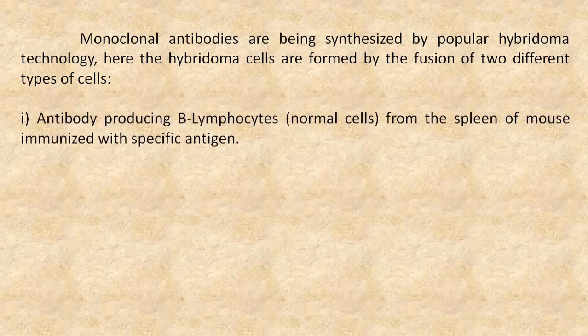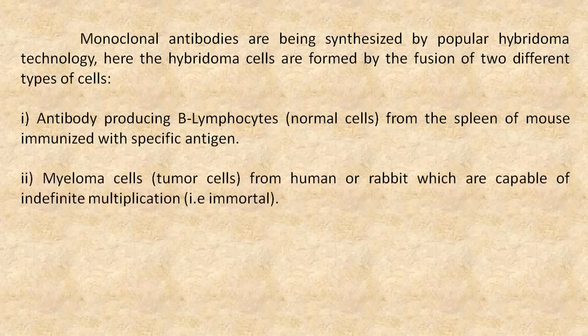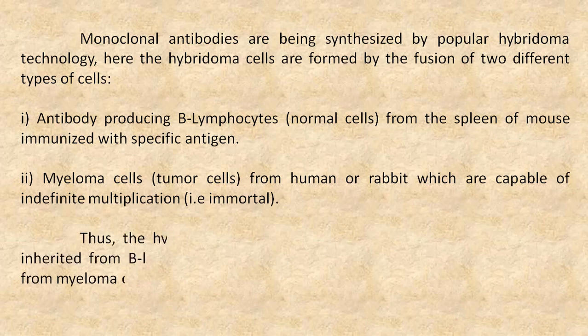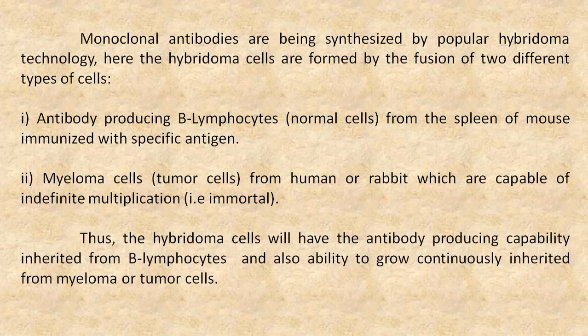One: the antibody-producing B lymphocytes from the spleen of a mouse immunized with a specific antigen. And second: the myeloma cells from human or rabbit, which are capable of indefinite multiplication.